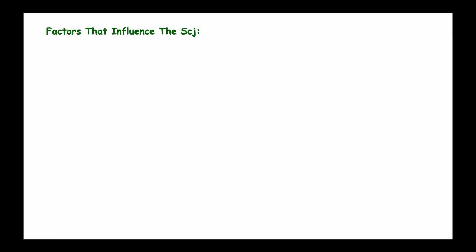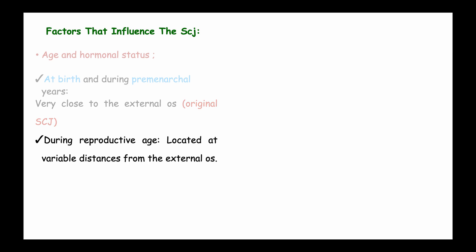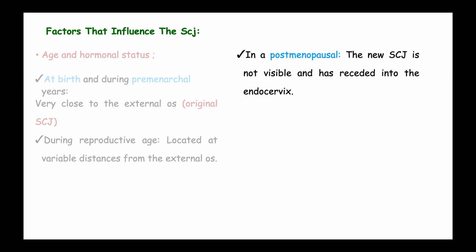Age and hormonal status play a major role in the structure of the squamous columnar junction. At birth and during pre-menarchal years, the squamous columnar junction is very close to the external os and is referred to as the original squamous columnar junction. During reproductive age it is located at variable distances from the external os, and in postmenopausal women the new squamous columnar junction is not visible and has receded into the endocervix.